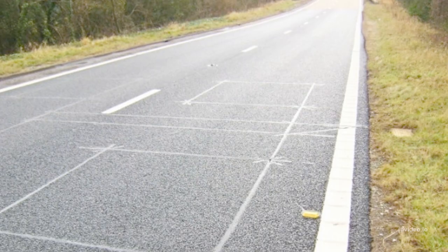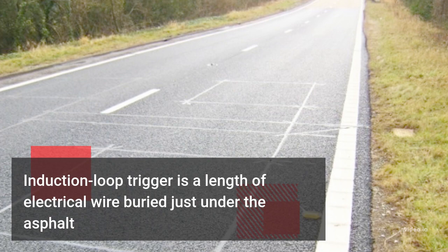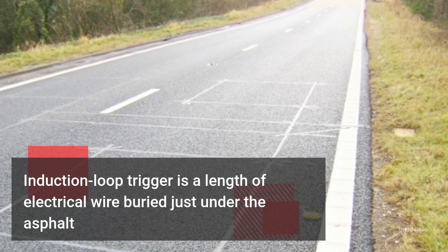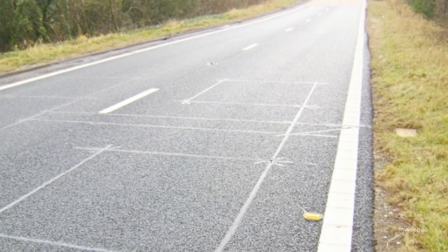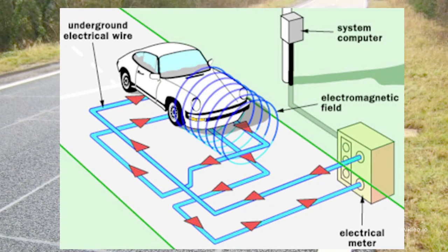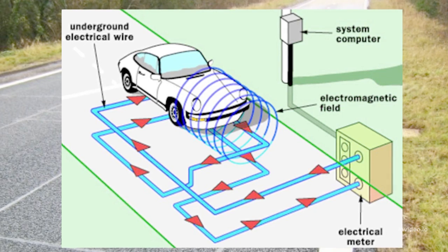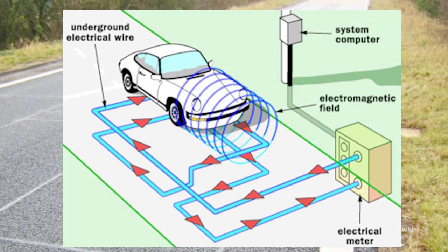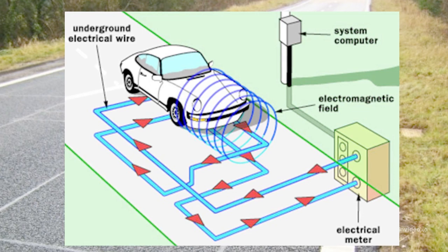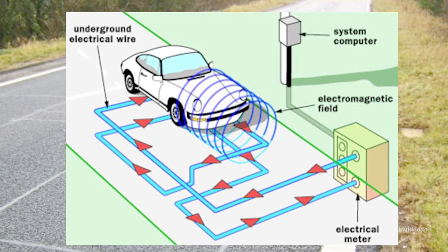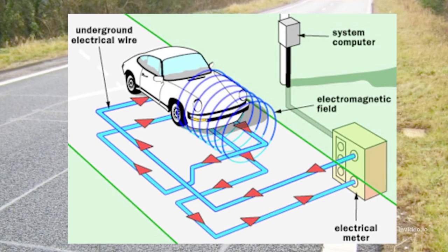The main trigger technology used in red light systems is the induction loop. An induction loop trigger is a length of electric wire buried just under the asphalt. Usually the wire is laid out in a couple of rectangular loops resting on top of each other. This wire is hooked up to an electrical power source and a meter. When you send electrical current through a wire, it generates a magnetic field. Positioning the wire in concentric loops amplifies this field. The meter in the system constantly monitors the total inductance level of the circuit, and when the inductance changes significantly, the computer recognizes this shift and knows that a car has passed over the loop.